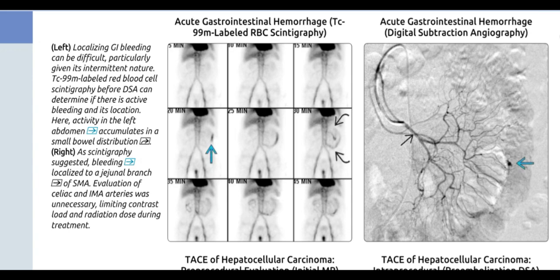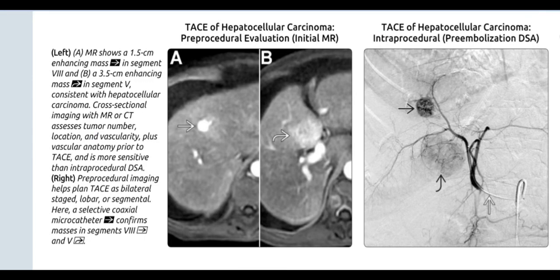There is a 1.5 cm enhancing mass in segment 8 and a 3.5 cm enhancing mass in segment V, consistent with hepatocellular carcinoma. Cross-sectional imaging with MR or CT assesses tumor number, location, and vascularity, plus vascular anatomy prior to TACE, and is more sensitive than intraprocedural DSA. Pre-procedural imaging helps plan TACE as bilateral, staged, lobar, or segmental. A selective coaxial microcatheter confirms masses in segments 8 and V.